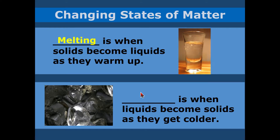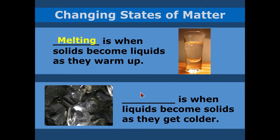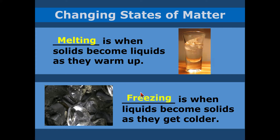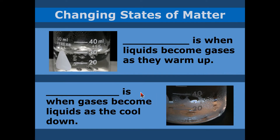Melting is when solids become liquids after they warm up — as you can see here with this glass. And then we have freezing. We also have evaporation and condensation. All of these are changing states of matter.